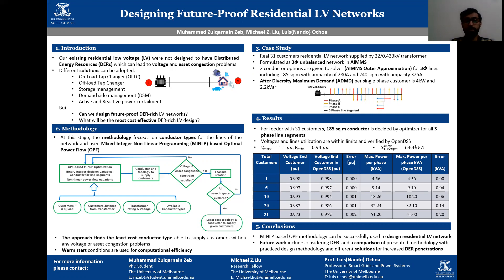The ADMD per-phase per customer is 4 kilowatts and 2.2 kVAr. When this methodology is applied on this real network, we see that the optimizer selects the 185 square millimeter conductor. As verification, we matched the voltage and power flow results with OpenDSS results, and we see that the voltage and line utilization are within limits, and the selected conductor is able to satisfy the customer load without any violation of the technical constraints.